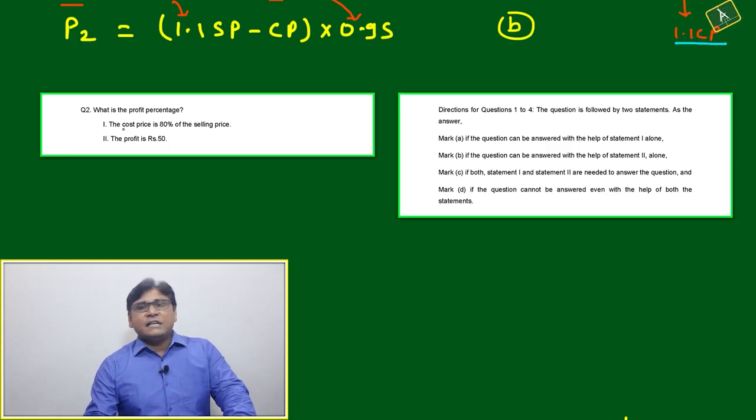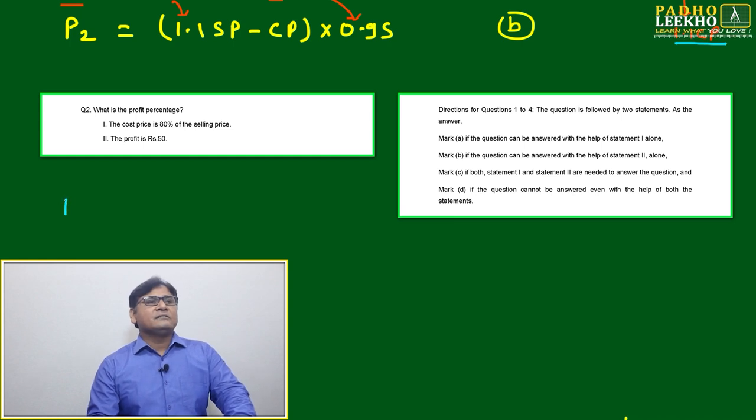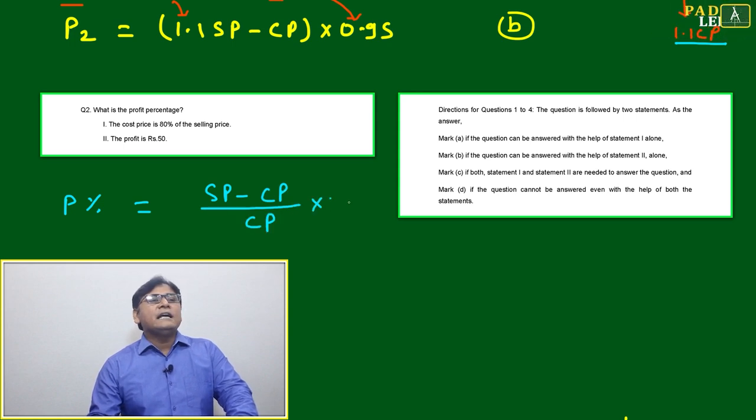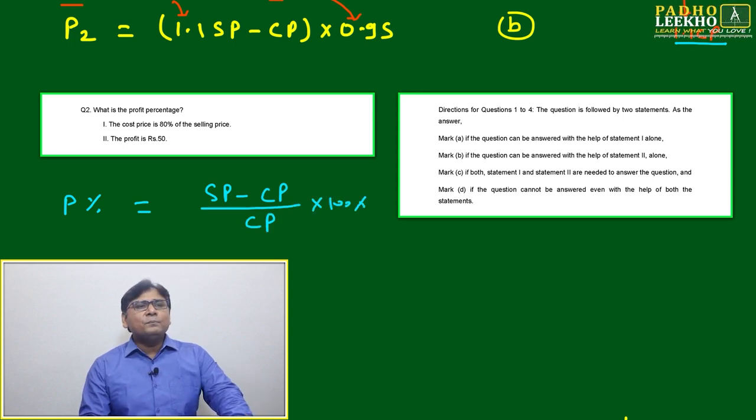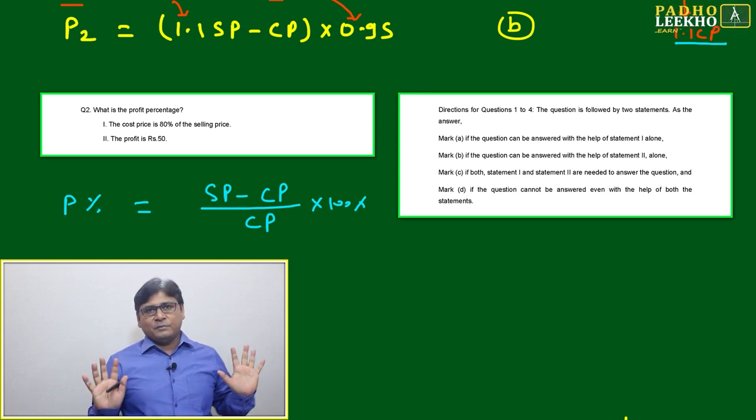Let's come to question number two, another data sufficiency question. What is the profit percentage? The profit percentage formula is selling price minus cost price by cost price into hundred percent. We need to know the selling price and cost price to calculate the profit percent.